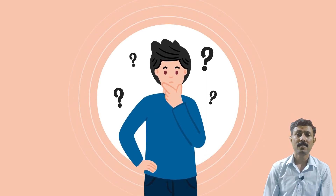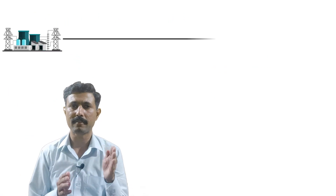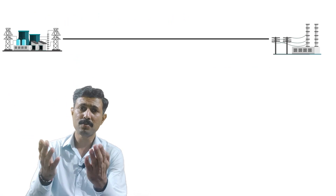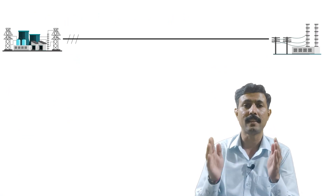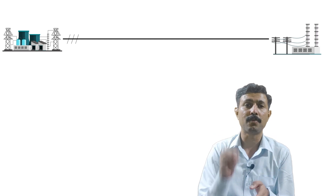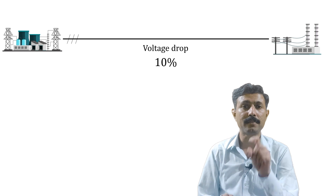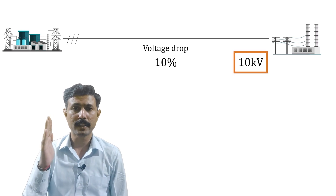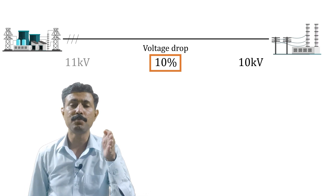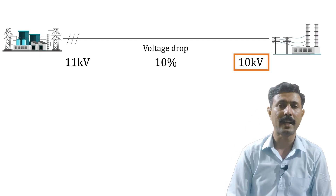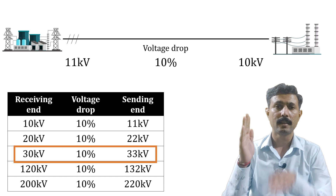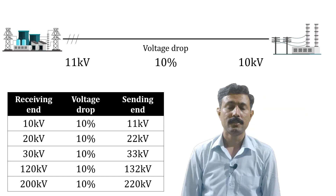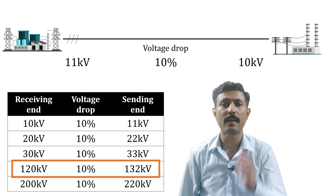Then the next question comes — what is the real reason behind this? Now let's understand another reason with this example. Generally, the generating station is far away from the load side — a long distance between the generating station and the load. Because of this long distance, there will be some voltage drop. The allowable limit of that voltage drop is 10%. So, for example, if I want to receive 10 kV at the load side, I add 10% voltage drop, giving 11 kV to send. If I want to receive 30 kV, plus 10% drop gives 33 kV. Likewise, if I want to receive 120 kV, plus 10% drop gives 132 kV.